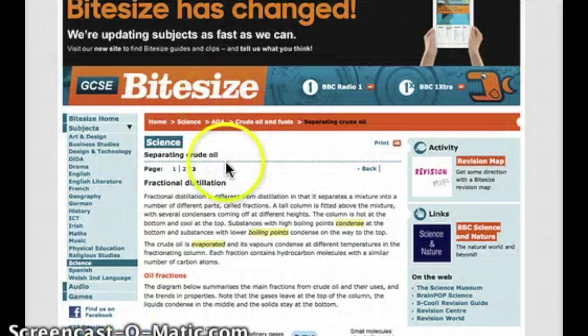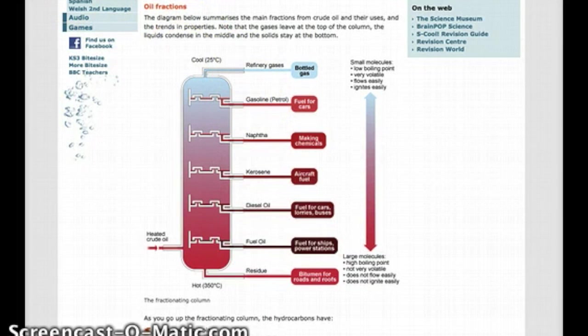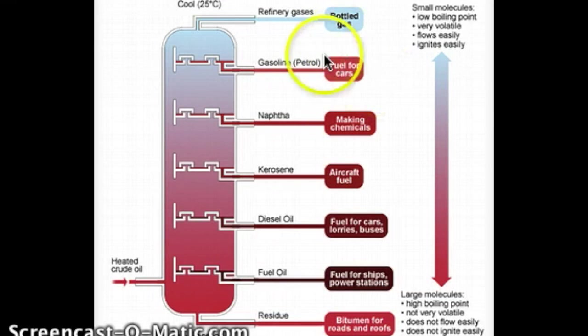If we go back to GCSE Bitesize, where it tells you about the fractions of crude oil, we collect all the fuels up here. The gases, the shorter chains - the volatile liquids are things like gasoline, petrol, refinery gases. Whereas down here, the long chains are very viscous, non-volatile liquids and really gloopy ones like bitumen that we use straight onto the roads - tar-like substances.